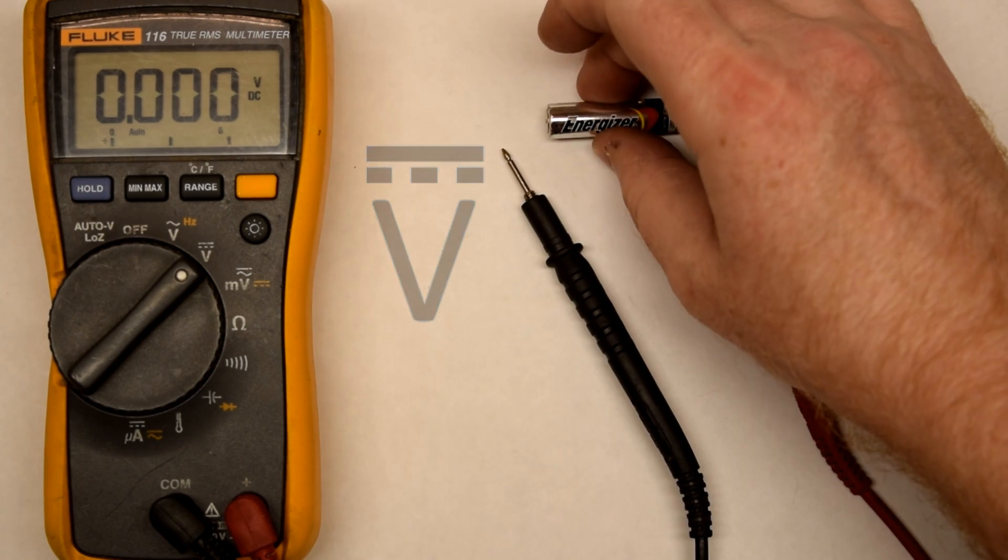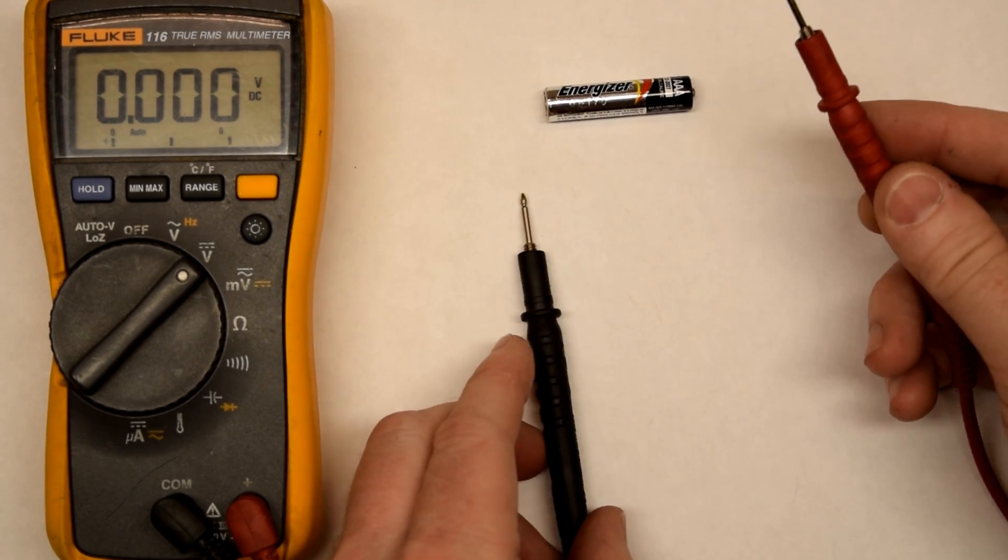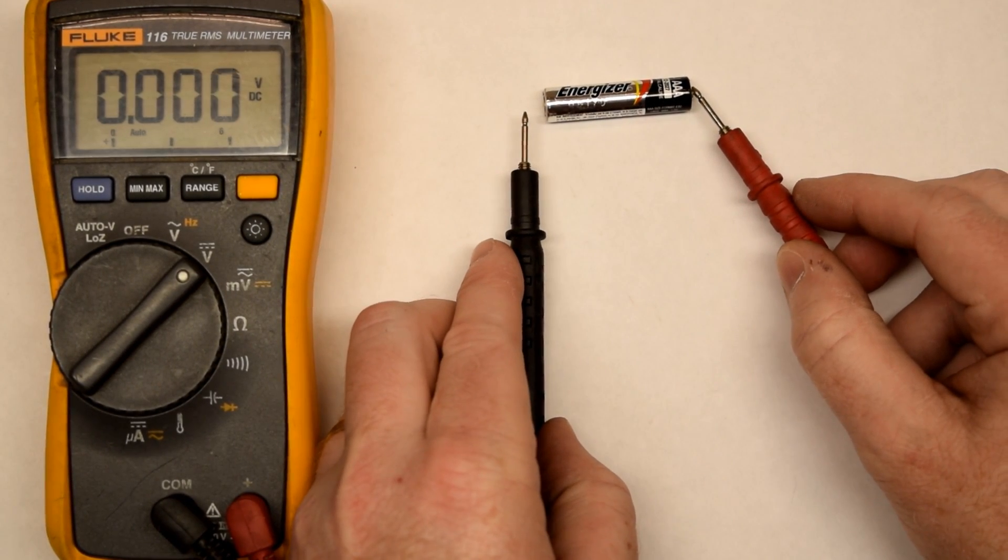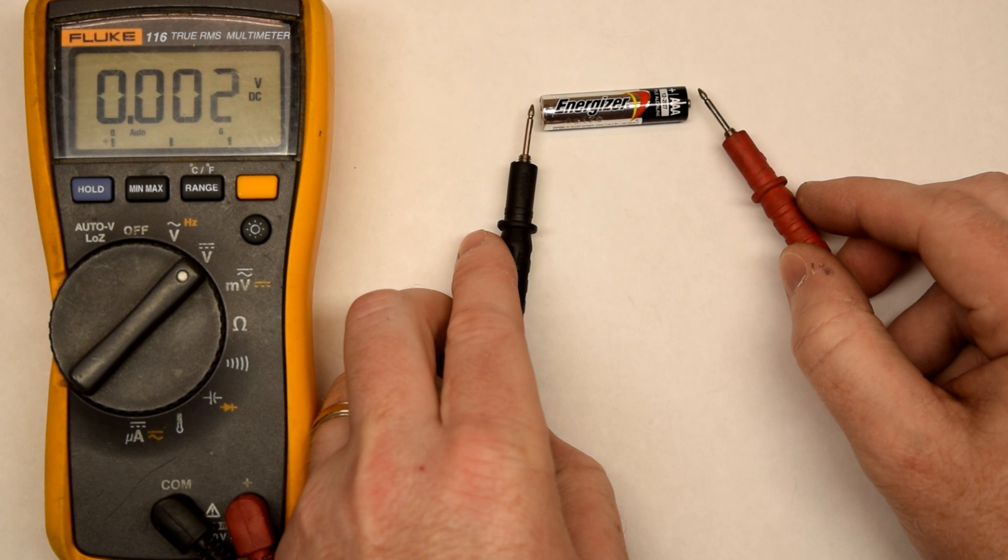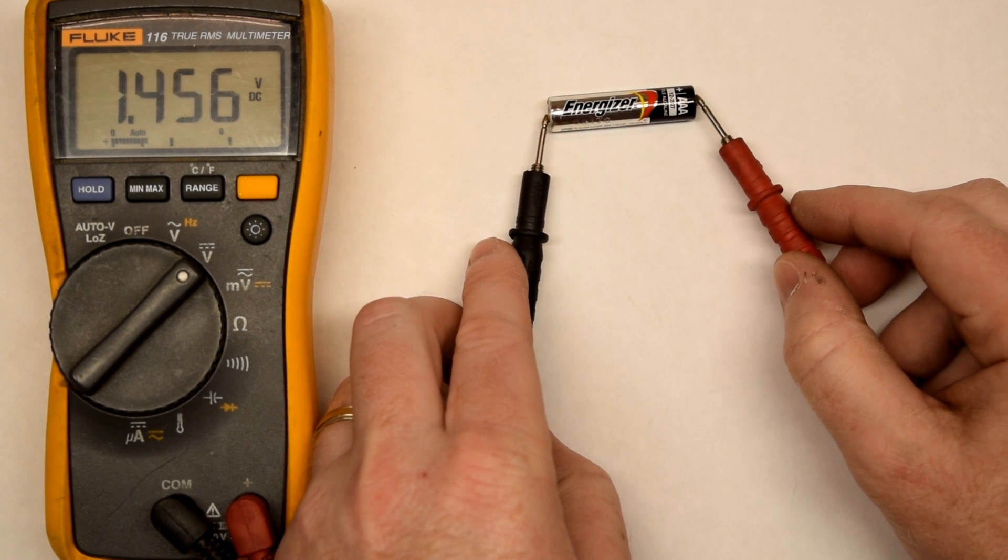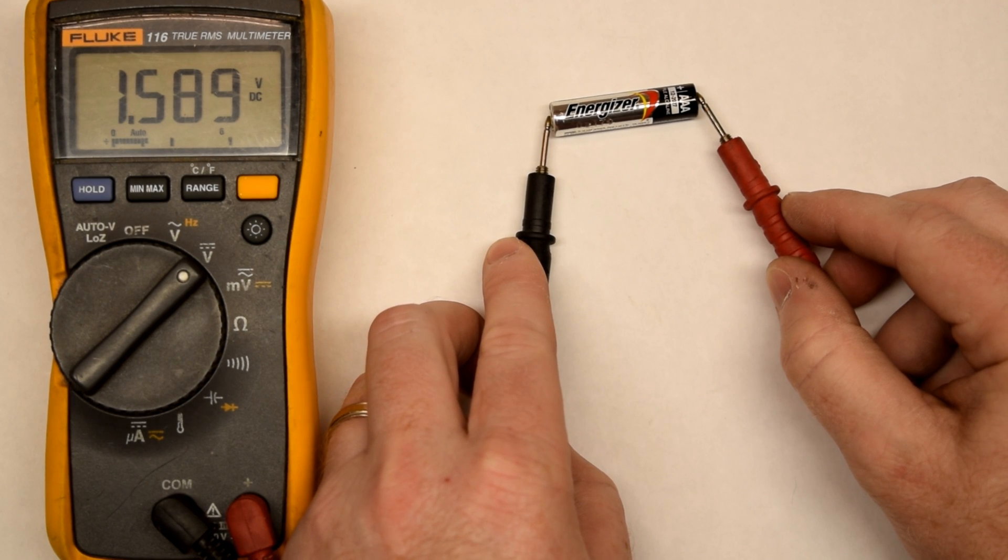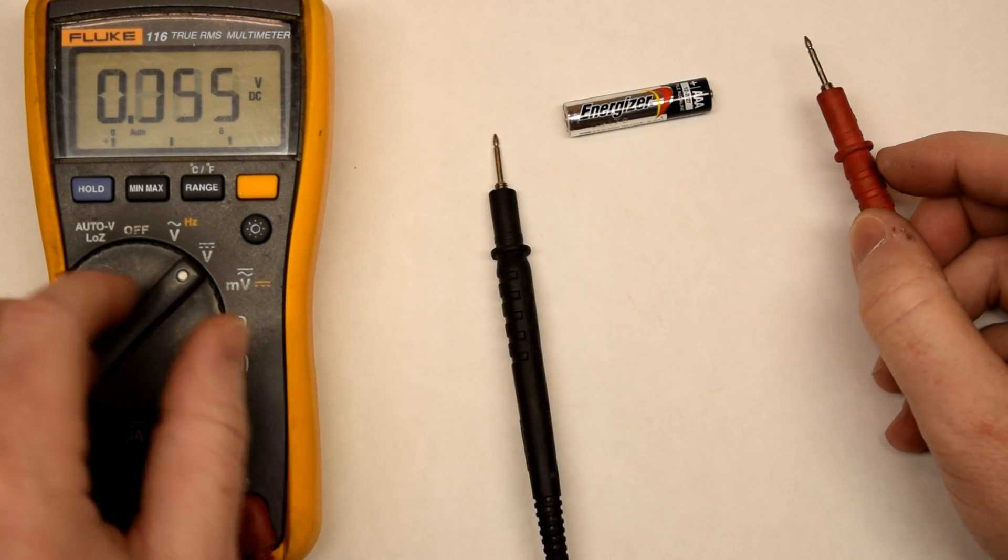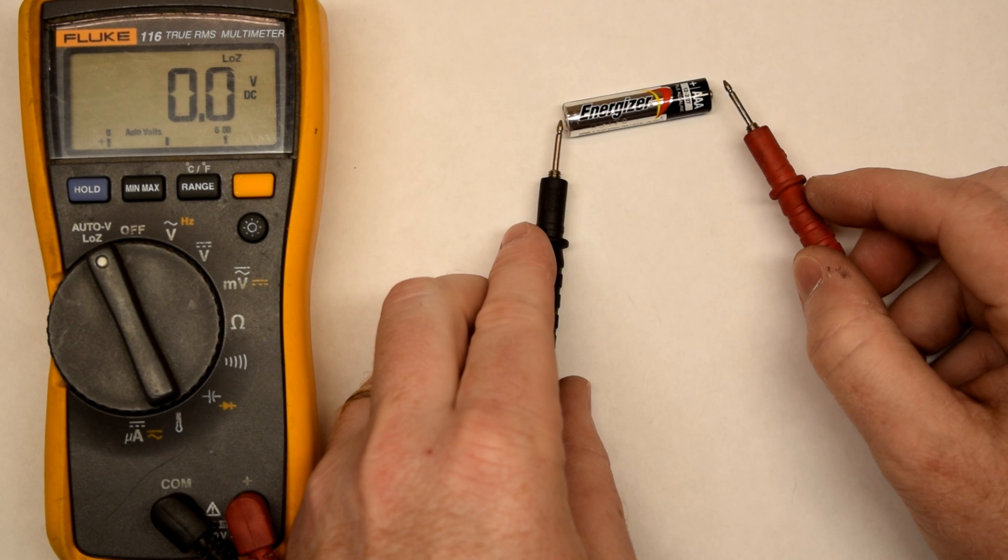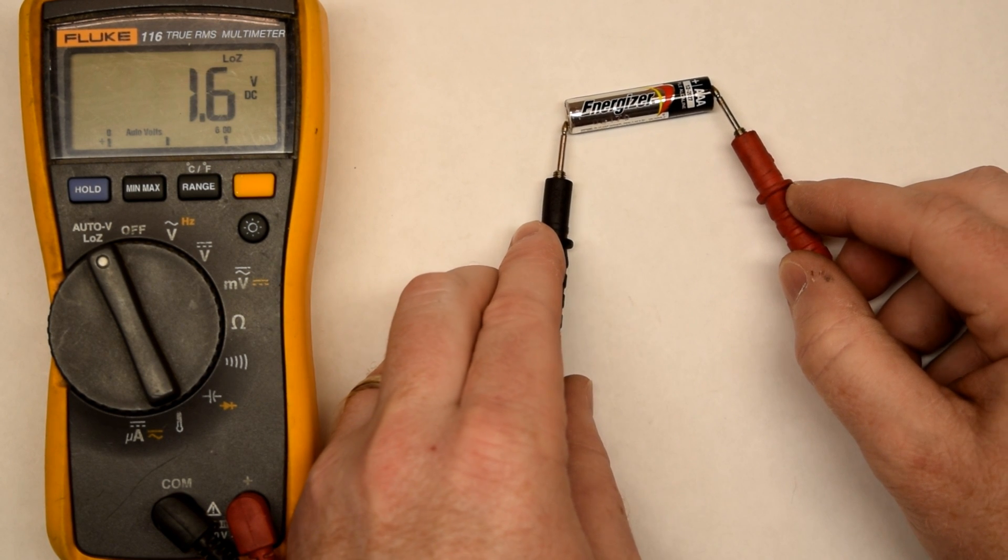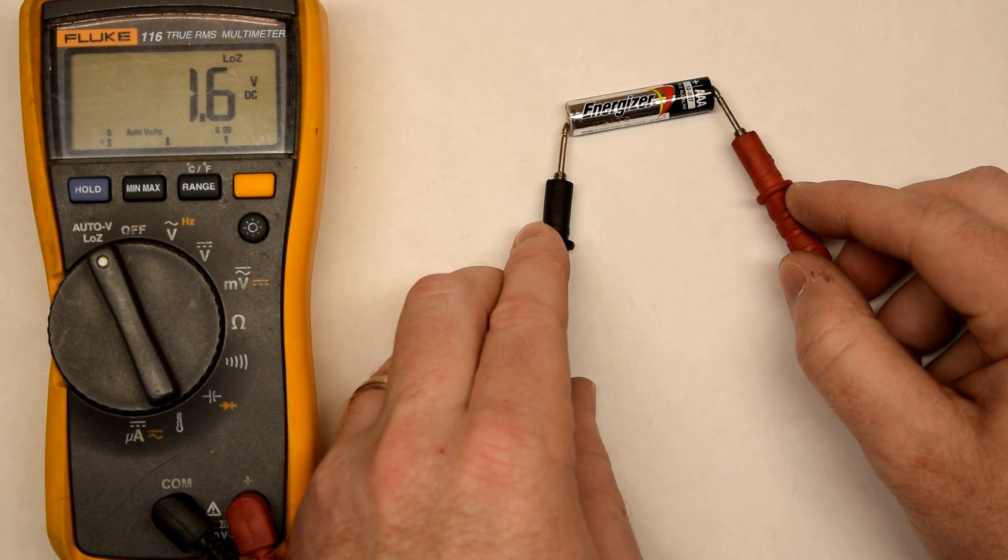For instance, we will start with a battery. Take our positive side and touch it to the positive terminal on the battery, and the common we're going to stick to the negative side of the battery. And you'll see that gives us 1.6 volts, roughly. Same thing can happen over here on auto voltage. It will auto detect that this is a battery and give me 1.6 volts.